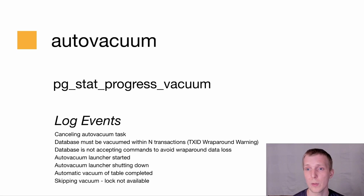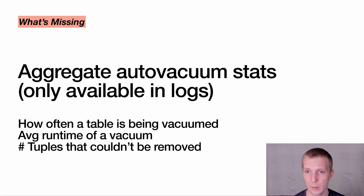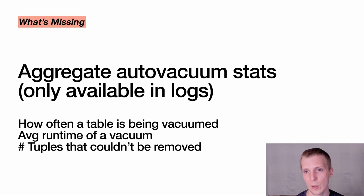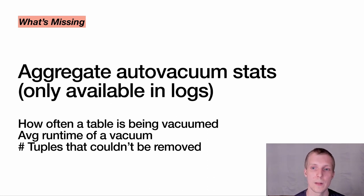On autovacuum, there is so much information already available, yet surprisingly a lot of folks still have challenges with autovacuum — which speaks to how to make it easier for users, not just adding more information. The one thing that could be helpful to make more folks tune their autovacuum more easily is having not just log events and pg_stat_progress_vacuum, but an aggregate view. Right now you can only see the last vacuum on a per-table basis. You can't see how many vacuums happened, how long they take on average, or if there are conditions like tuples not being removed because of an open transaction. Improving this would let more folks make use of it.